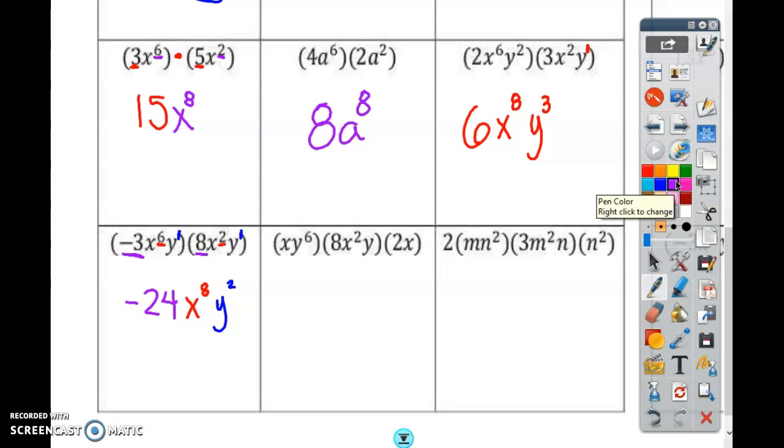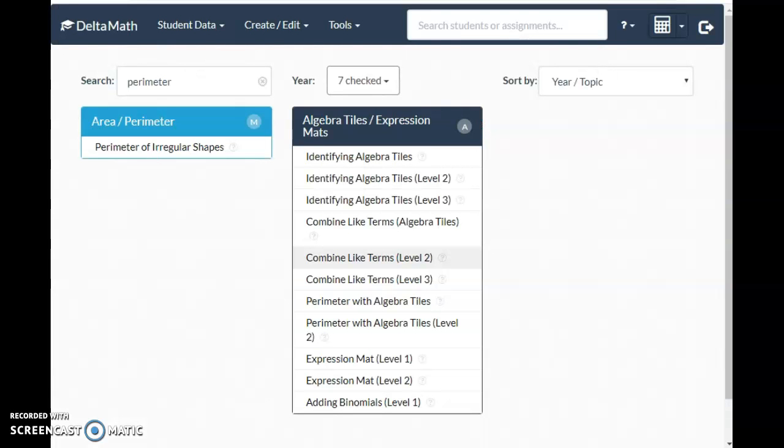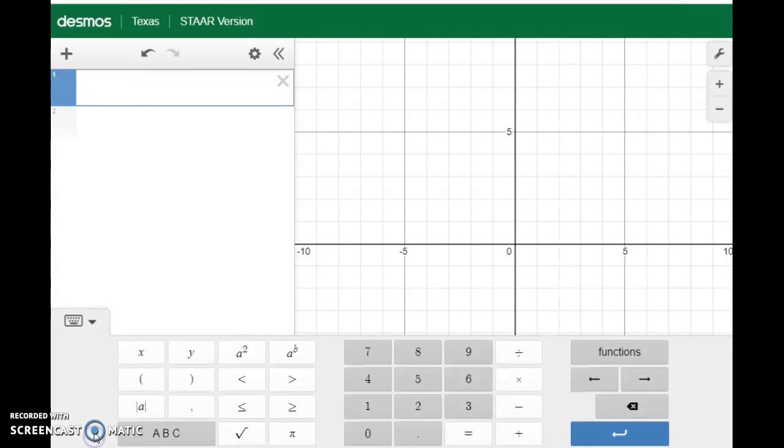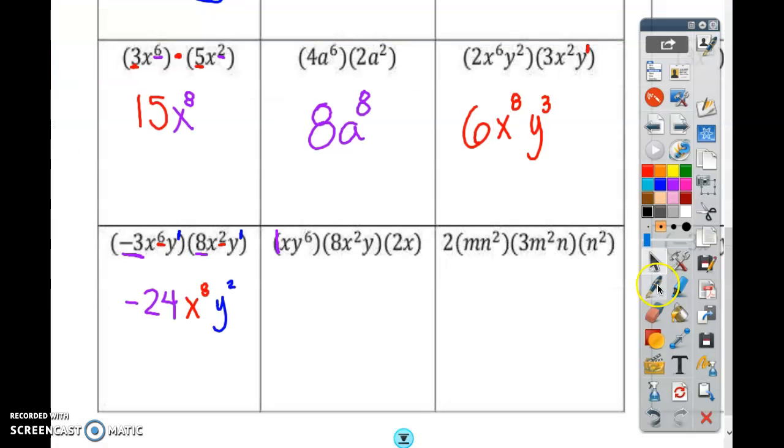Here. What's the number right here? This is a 1. So I have 1 times 8 times 2. Use Desmos. 1 times 8 times 2. 1 times 8 times 2 is like 8 times 2 is 16. So if there's no number in the front, it's a 1. So I have 16.